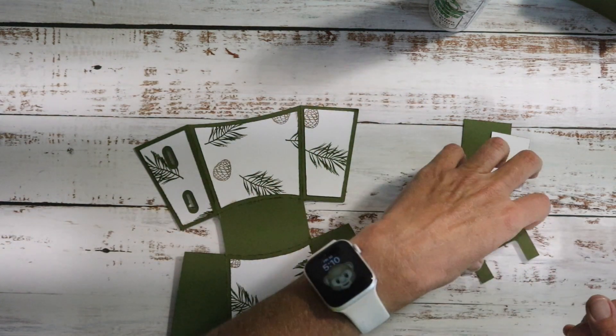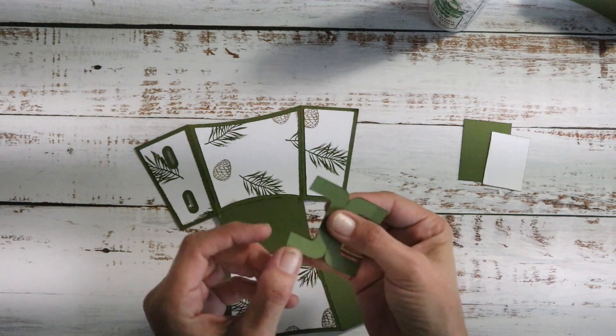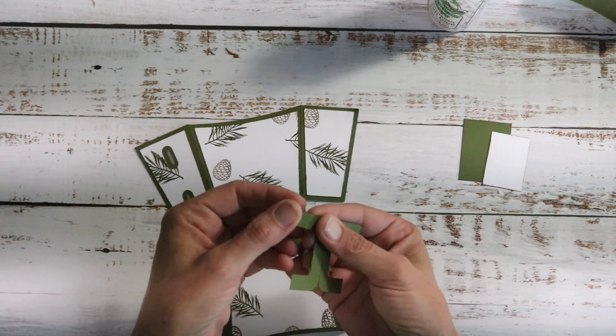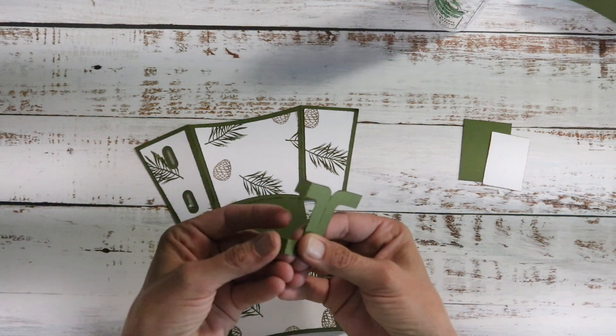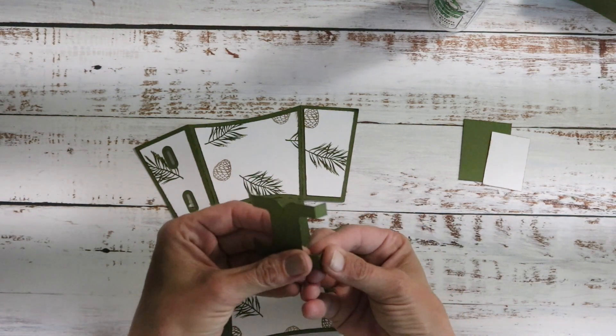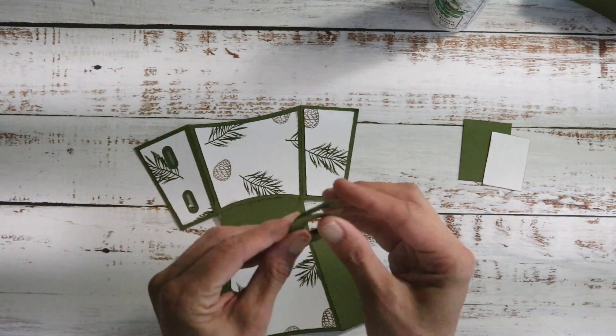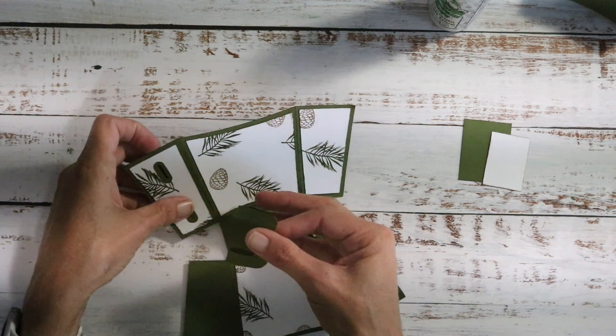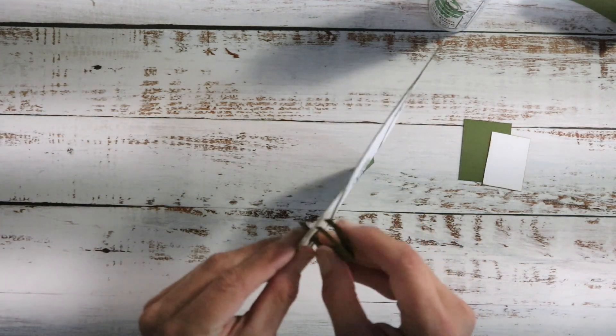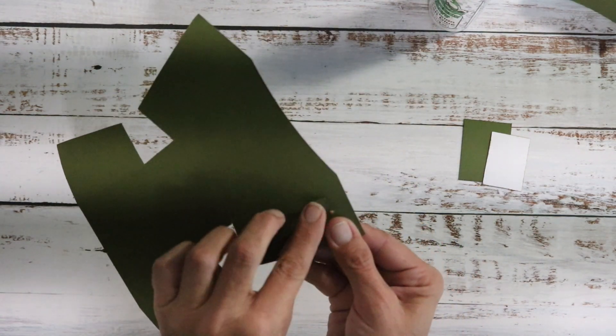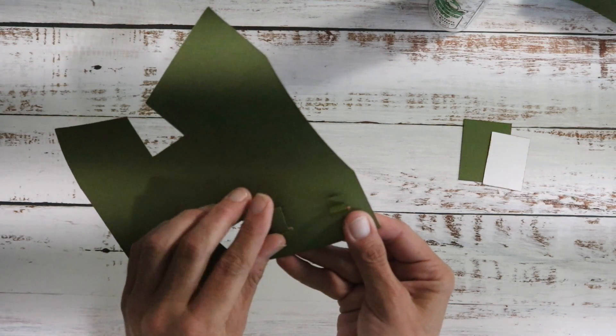I'm going to put this in on this side. Now we're going to take this. There's a score mark in the middle and there's these little tabs. Fold those down as well. So we're going to fold together and then we're going to put the tabs through the hole right here and then open the tabs up and then put our glue on.